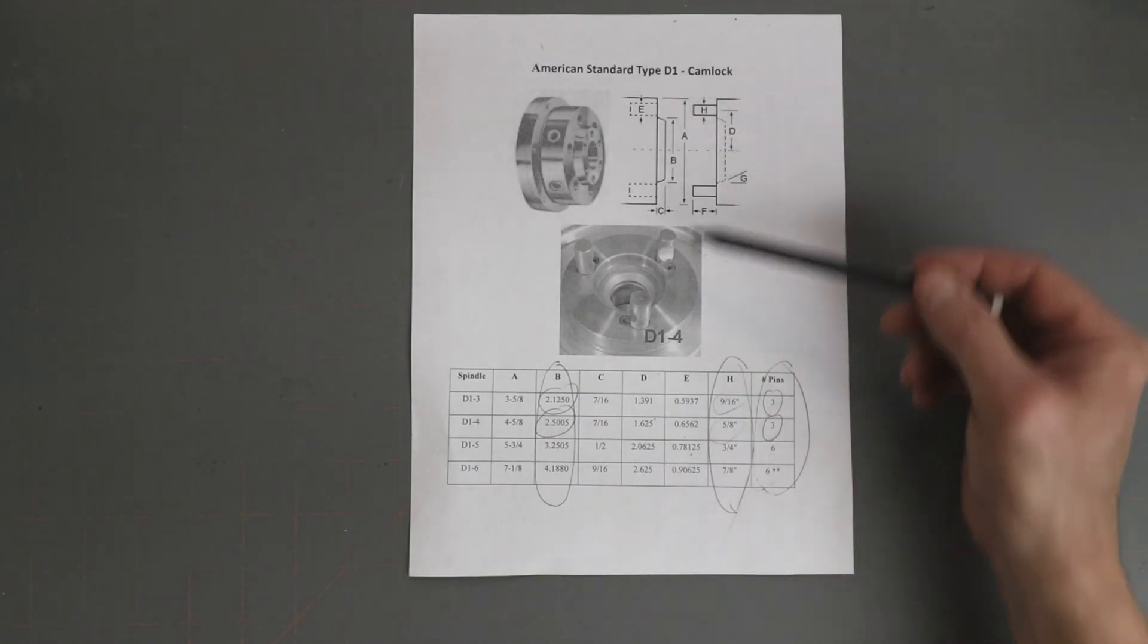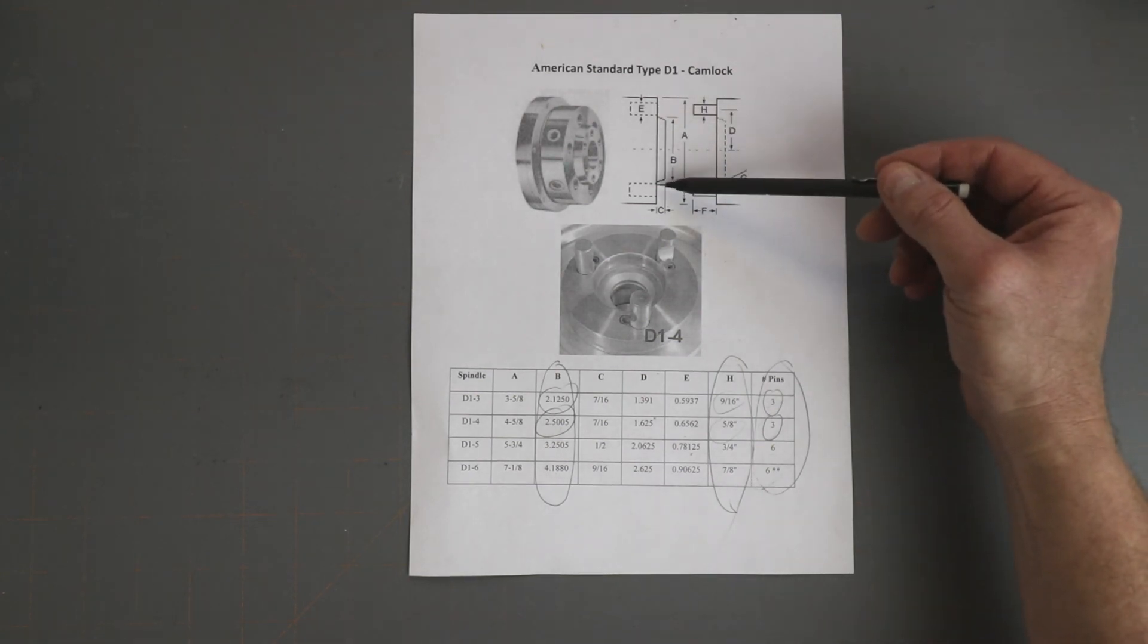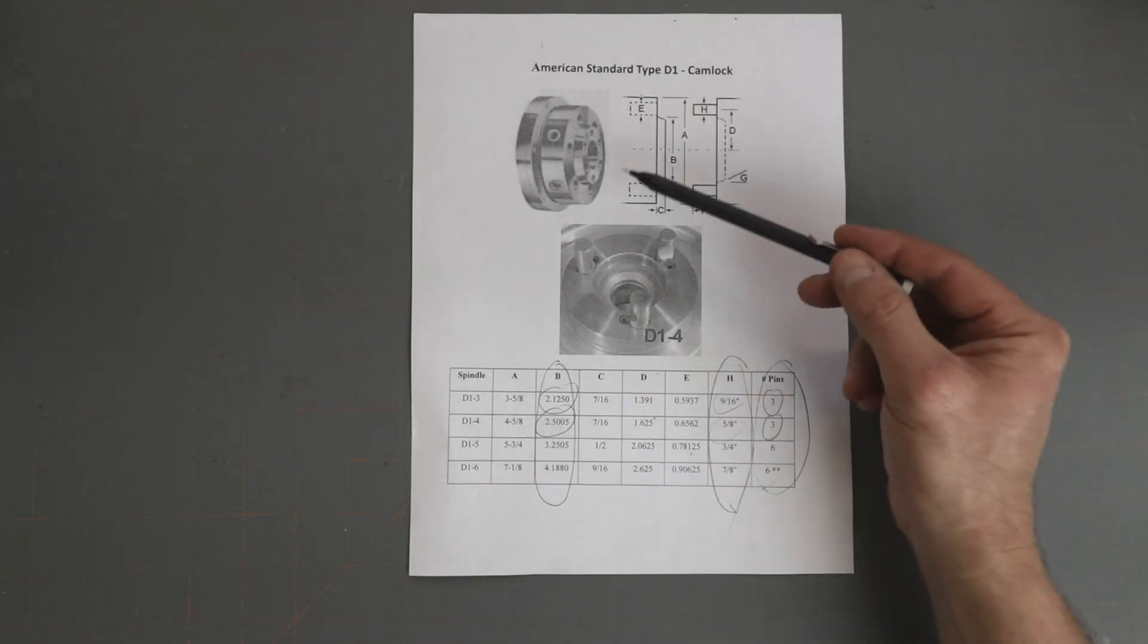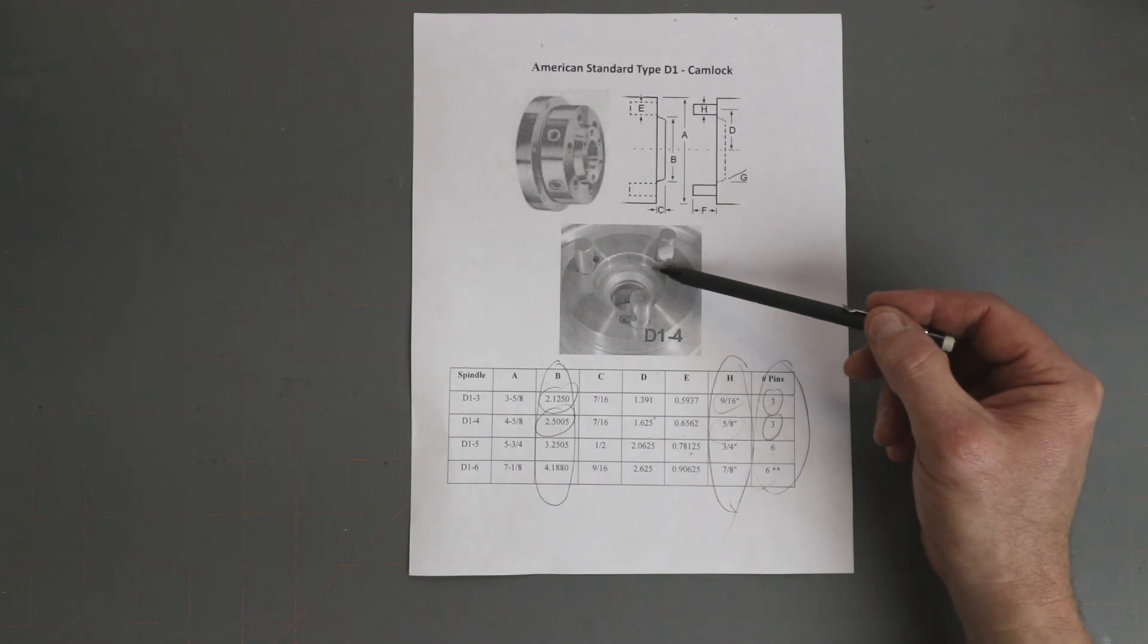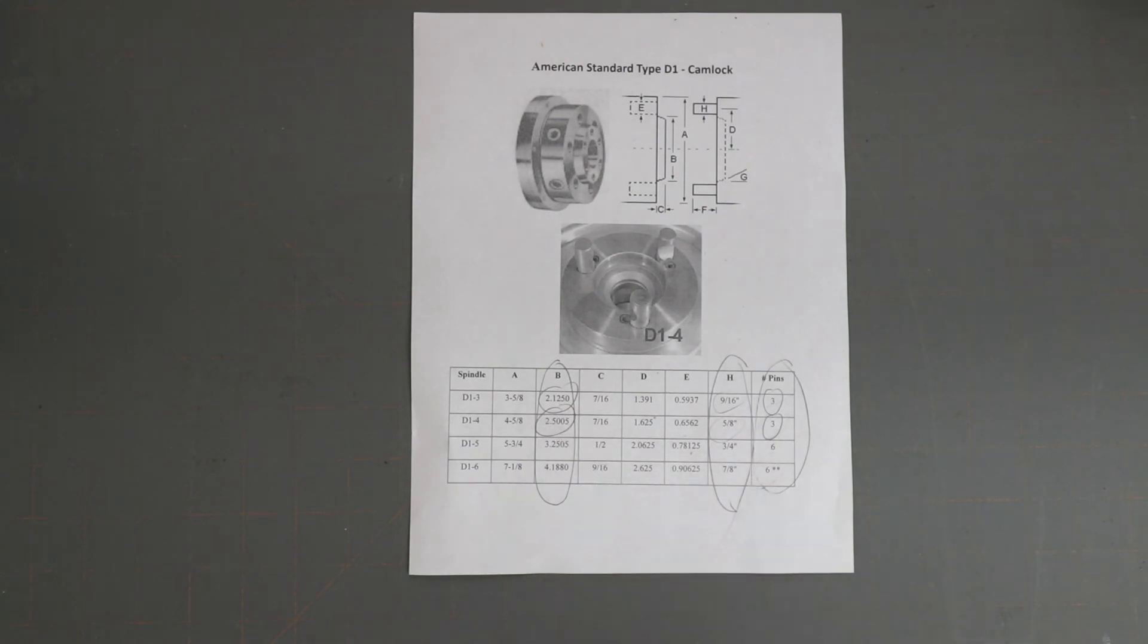And when we look at measurement B, which is basically to the outside of the taper which would match your chuck or faceplate, 2.125 is just 2 and 1/8, and 2.5 is 2 and a half.